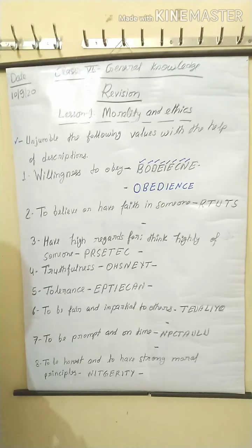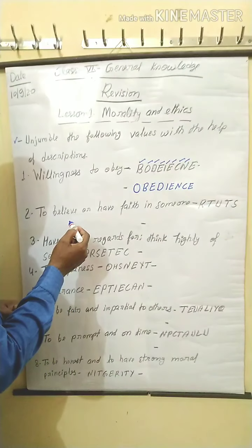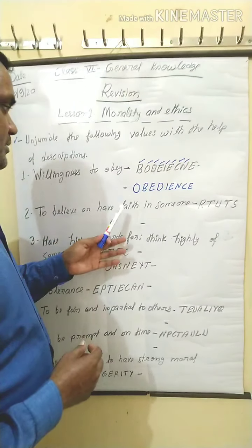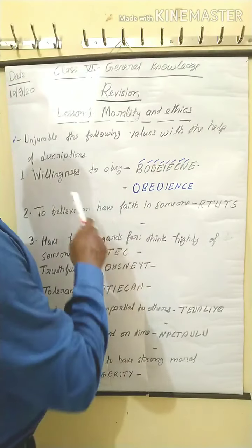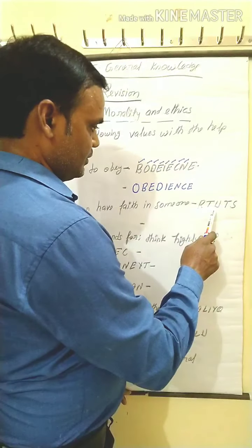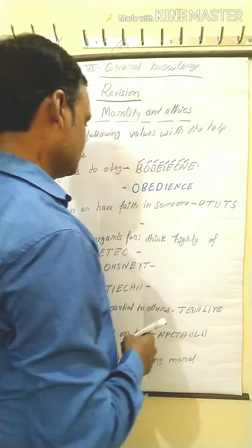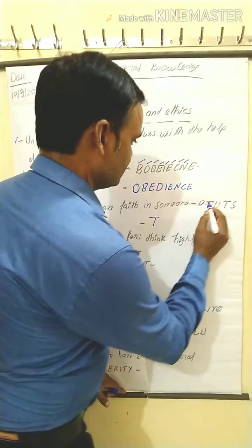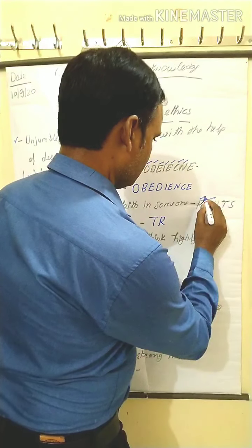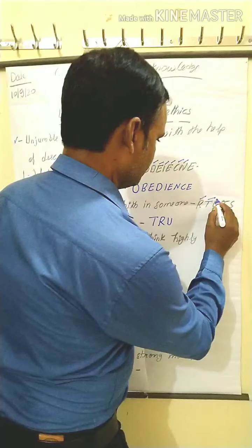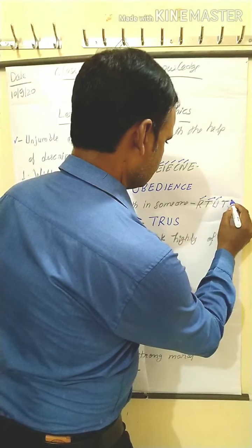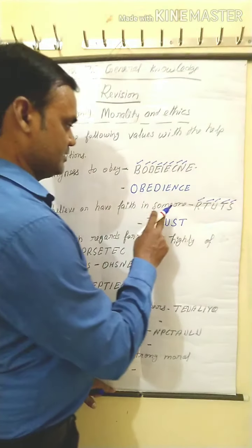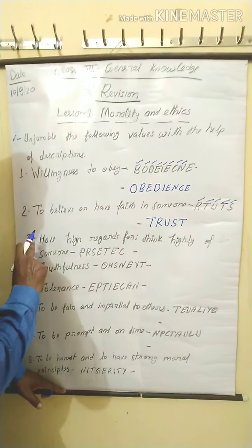Next, number two: to believe or have faith in someone. The jumbled letters given are R-T-U-T. The correct unjumbled word is Trust.